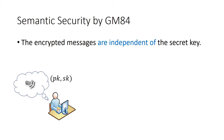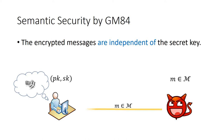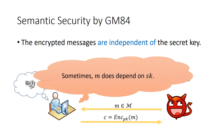When considering security for encryption schemes, we always assume that the messages are independent of the secret key. In this case, even if the message M is chosen by the adversary, he can still get the information on M from the corresponding ciphertext. However, in some situations, the plaintext message depends on the secret key. In this special case, the previously semantic security seems to be insufficient for providing security.